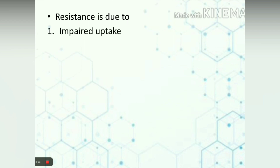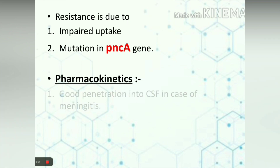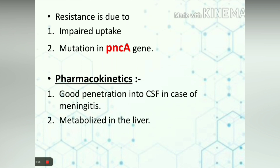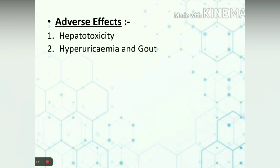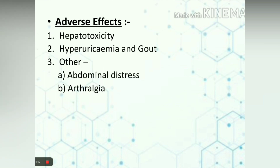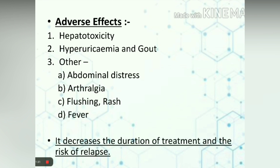Resistance is due to impaired uptake and mutation in the PncA gene. Pharmacokinetic properties: first, it has good penetration into the CSF in cases of meningitis. It is metabolized in the liver and excreted by the kidney, with a half-life of 8 to 11 hours. Adverse effects: pyrazinamide is the most hepatotoxic drug amongst all anti-TB drugs. It can also cause hyperuricemia and gout. Other adverse effects like abdominal distress, arthralgia, flushing, rash, and fever can also occur. The main reason for using this drug is that it decreases the duration of treatment and the risk of relapse.